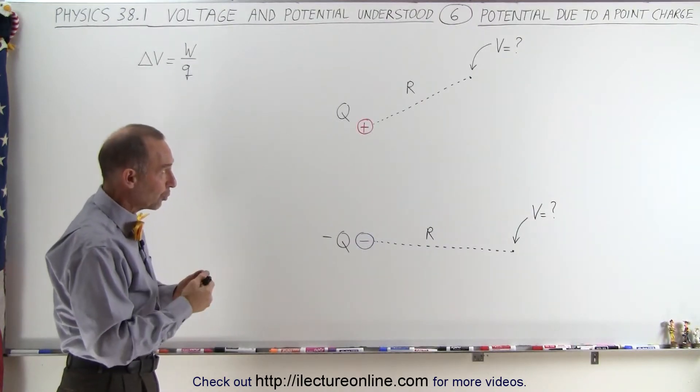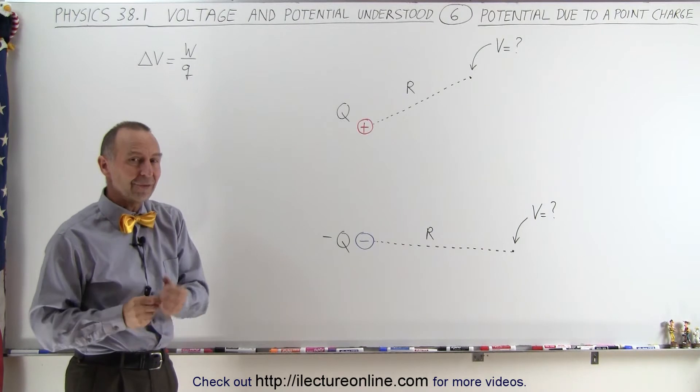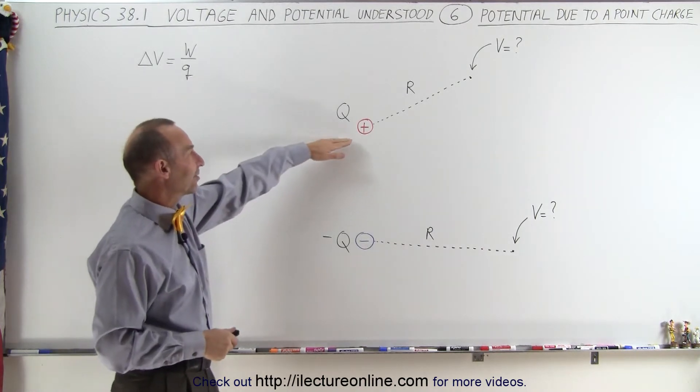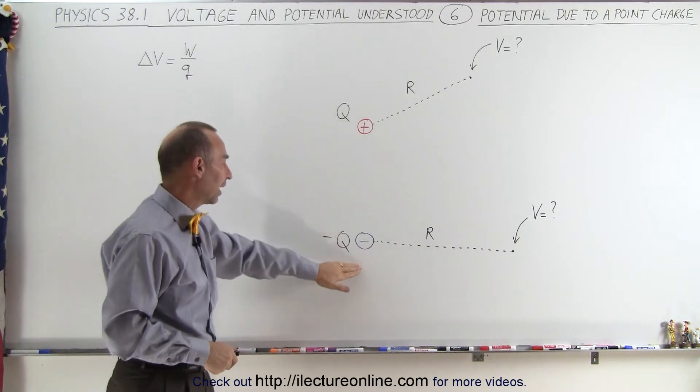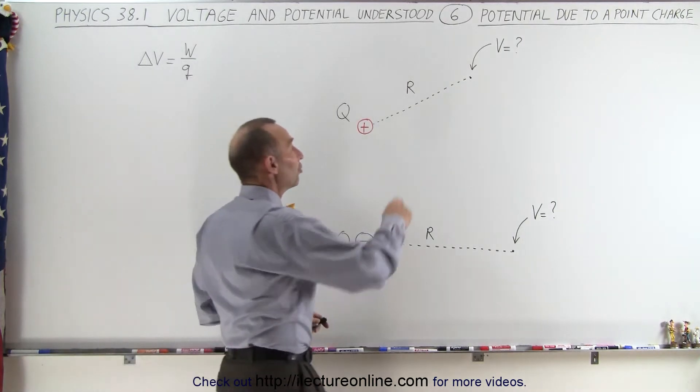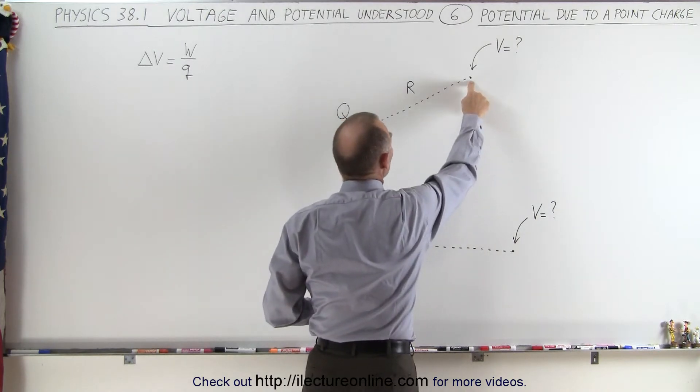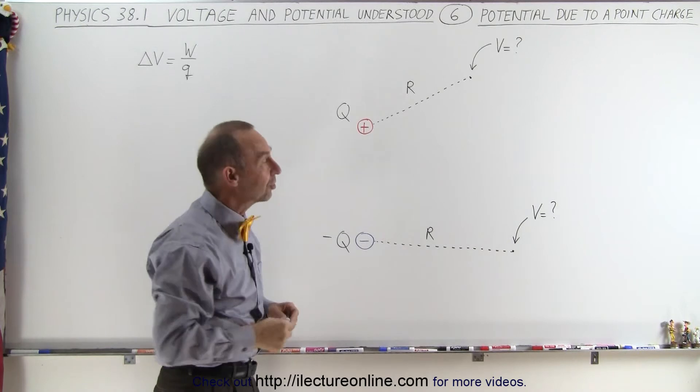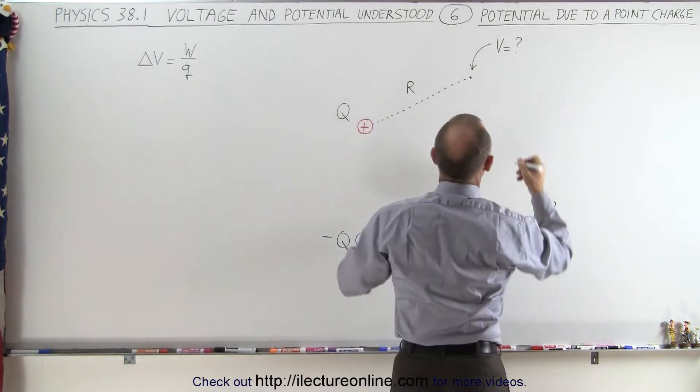Now what we're going to do here is show you what the equation would be if we have a point charge producing the voltage. Here we have an example where we have a positive charge, and here an example where we have a negative charge. The potential at some arbitrary distance away R, and it doesn't matter what the direction is, because there's no dependence on direction here, the equation we use for that is simple.